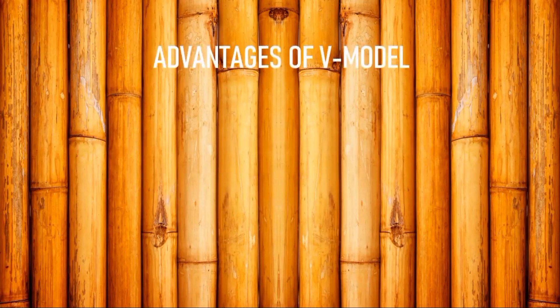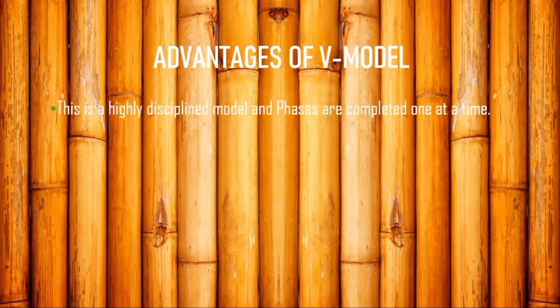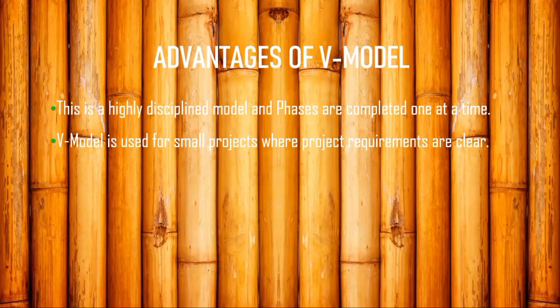Speaking about the advantages of the verification model: it is a highly disciplined model where phases are completed one at a time — all phases are clearly organized. The V model is used for small projects where the required environment is clear. The verification model contains eight phases and is used in small projects, not for in-depth projects like server-related or firewall-related kinds. It is simple and easy to understand.